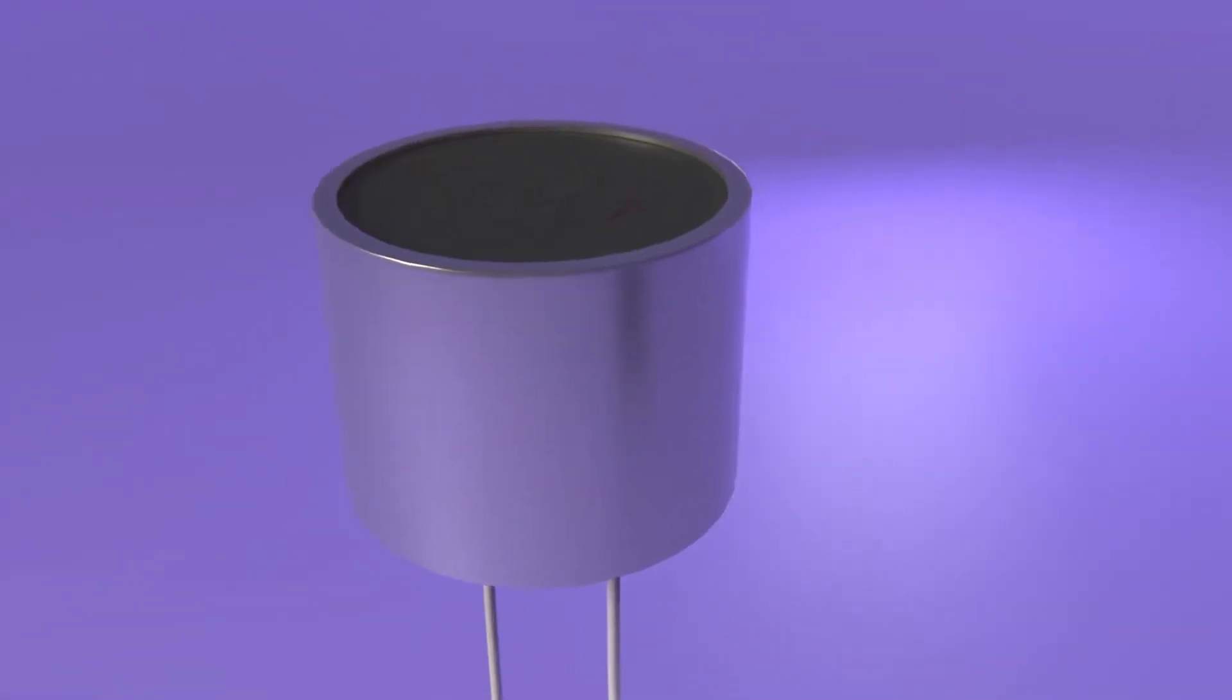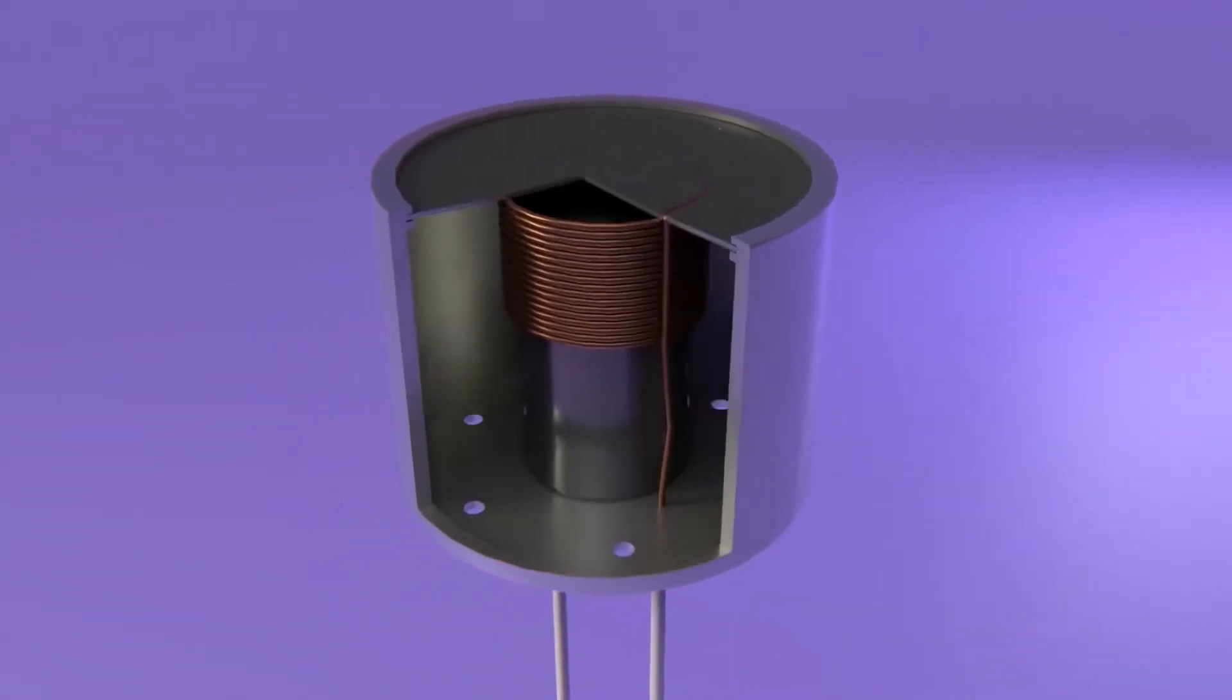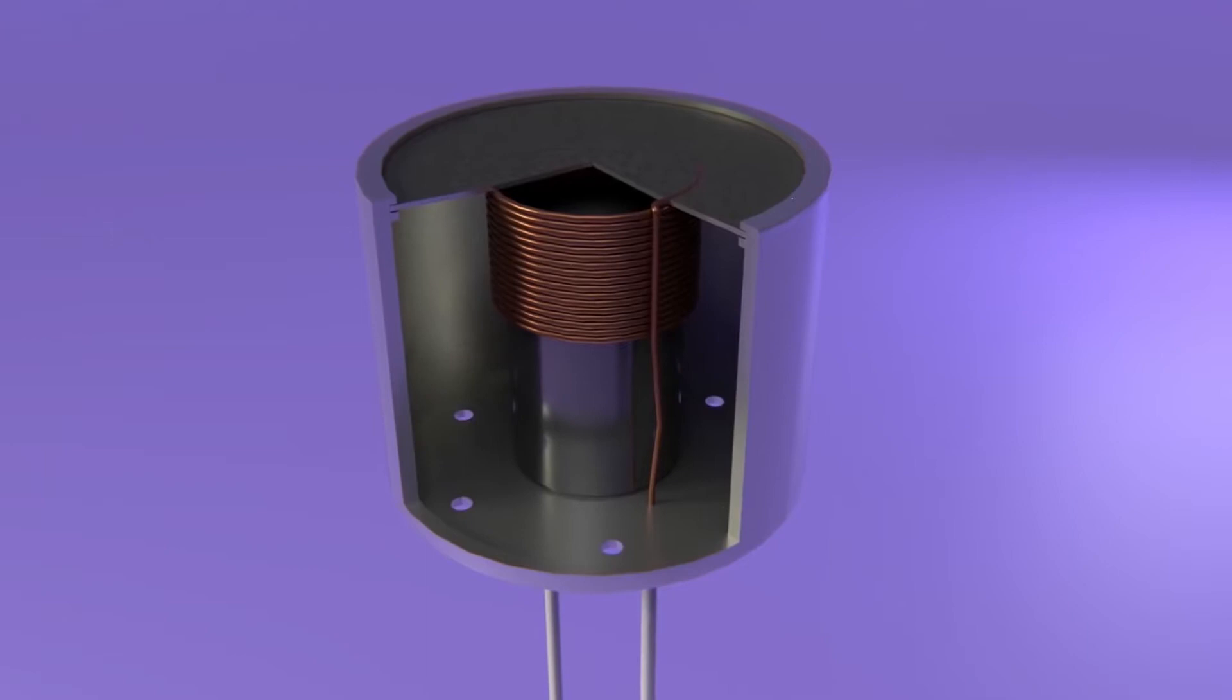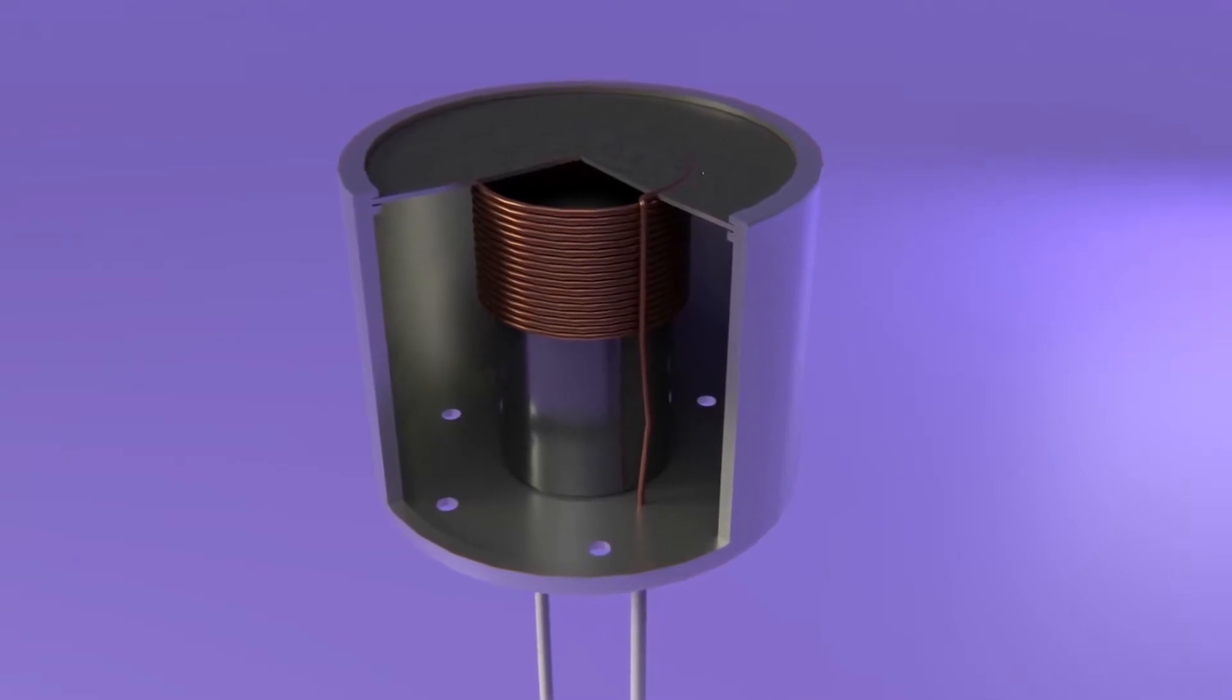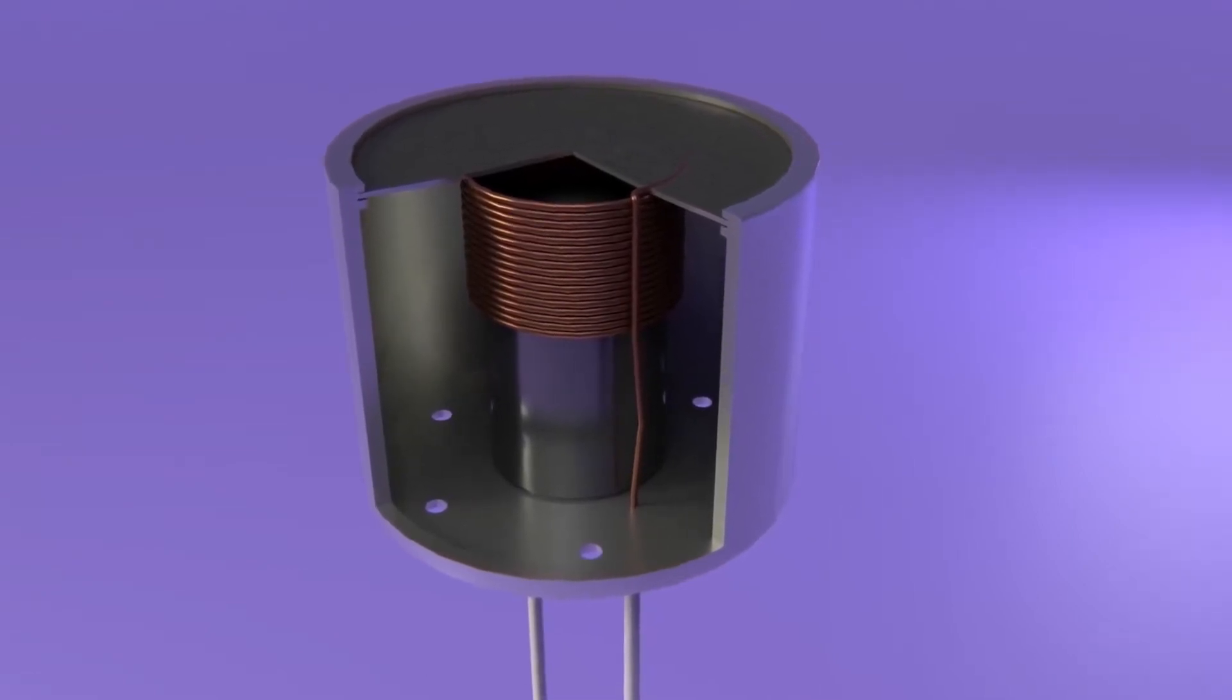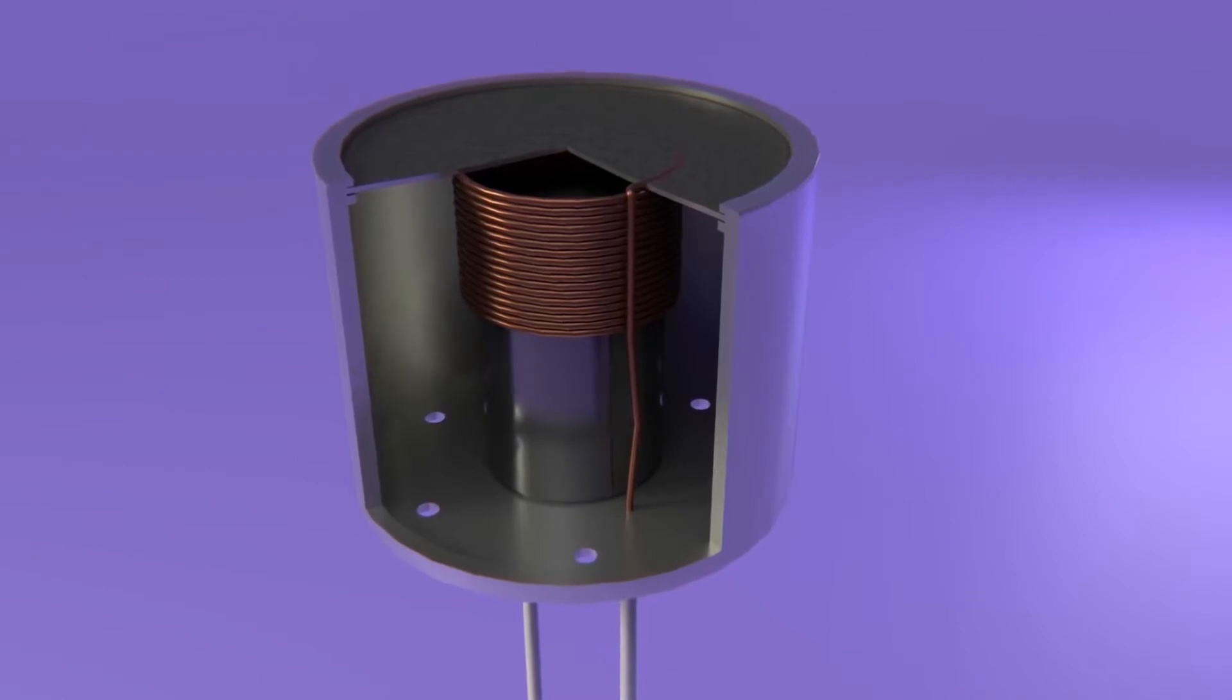Inside the microphone there is a capsule, which is composed of three parts essentially. Firstly a magnet, secondly a coil, and finally a diaphragm that is stuck to the coil, which amplifies the vibrations generated by the sound.